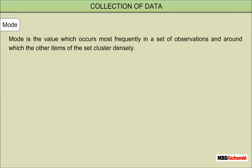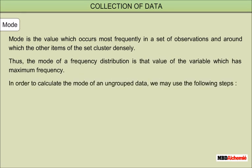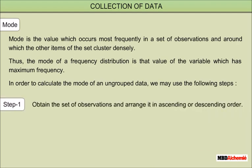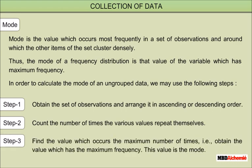Mode: the mode is the value which occurs most frequently in a set of observations and around which the other items of the set cluster densely. The mode of a frequency distribution is the value of the variable which has maximum frequency. Steps to calculate mode of ungrouped data — Step 1: obtain the set of observations and arrange in ascending or descending order. Step 2: count the number of times the values repeat themselves. Step 3: find the value which occurs the maximum number of times, i.e., the value with the maximum frequency.